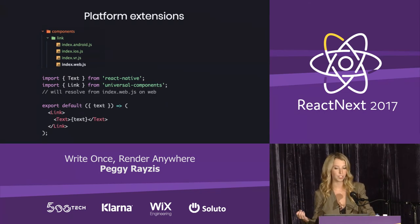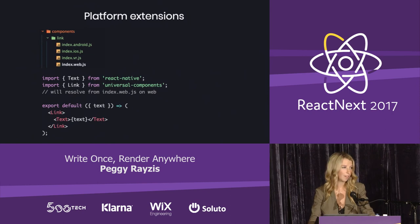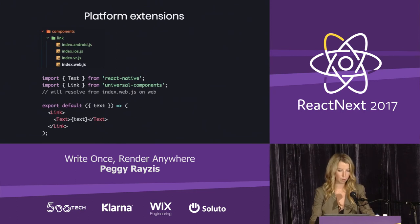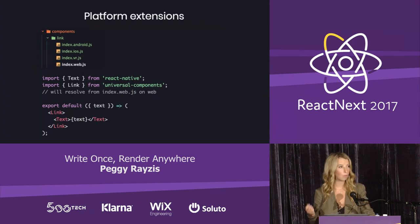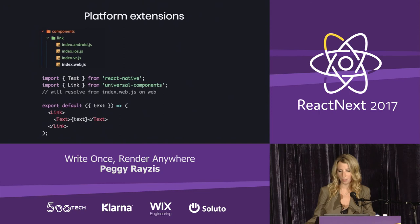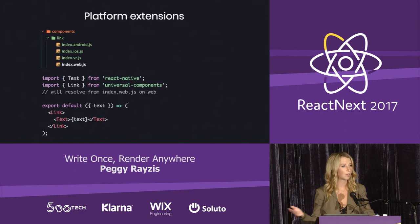For bigger, more substantial differences, you can use platform extensions, which you will need to configure in your Webpack build. You can prefix your file extension with the platform: .web.js, .ios.js, .vr.js, etc. Webpack and the React Native Packager will know where to resolve depending on the platform. This is really great for things like linking, where the implementation varies significantly between platforms — you're going to want to split that up with a platform extension.